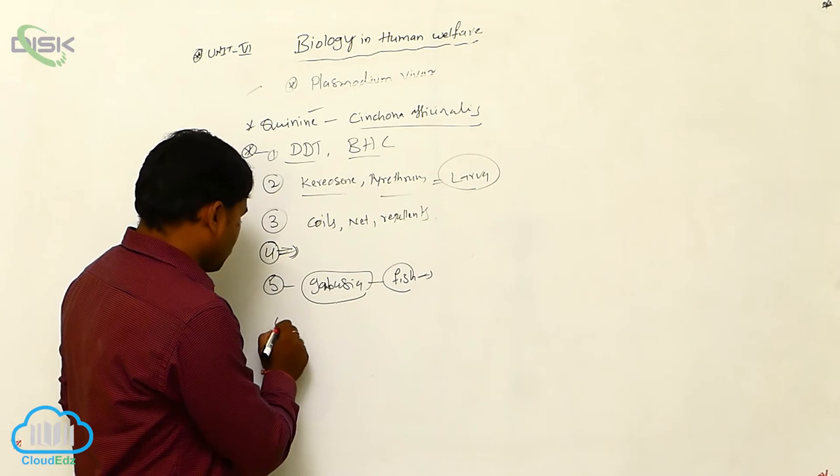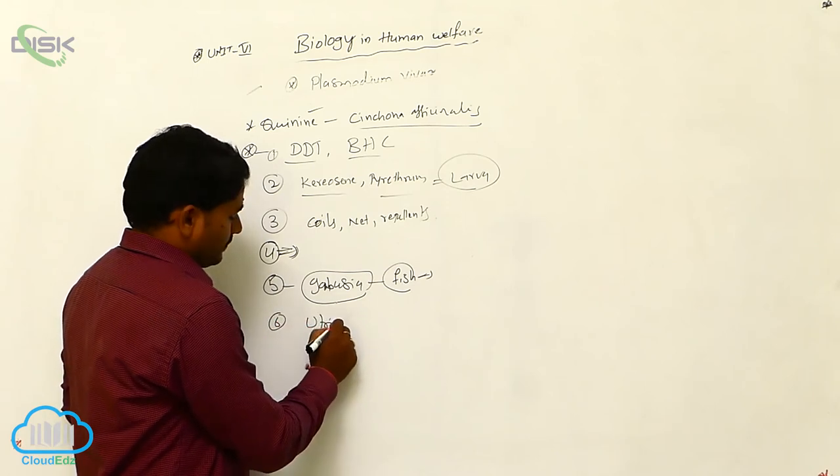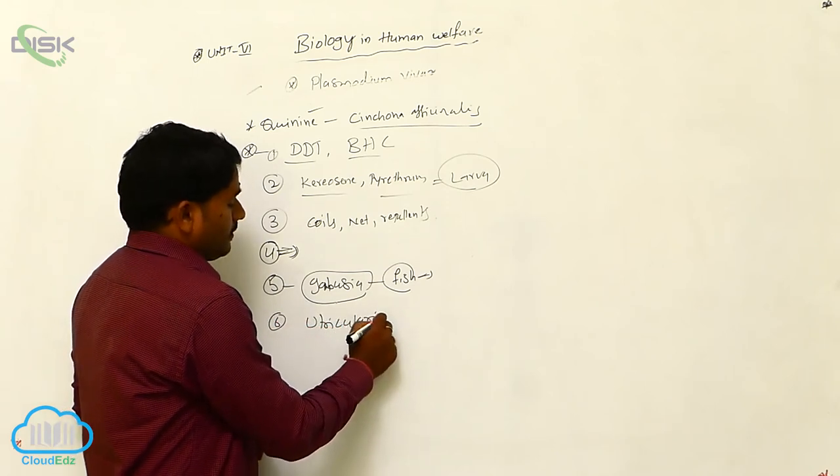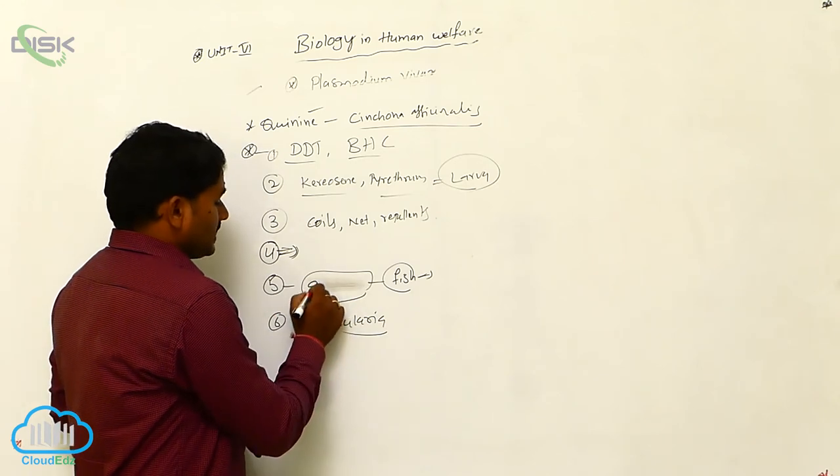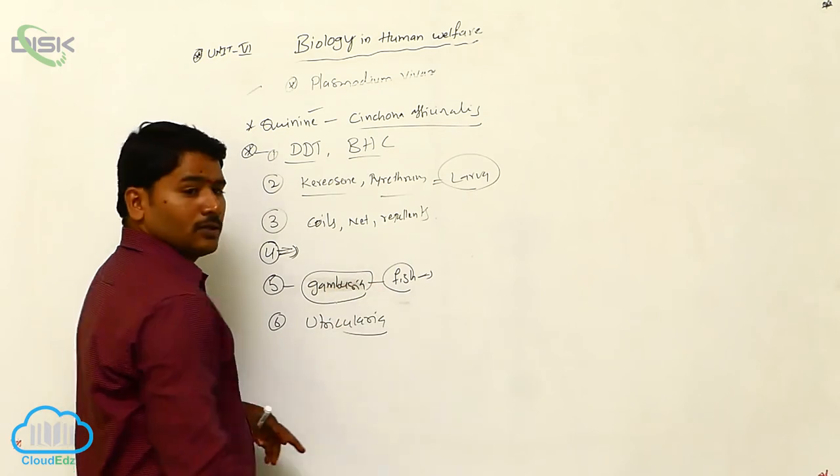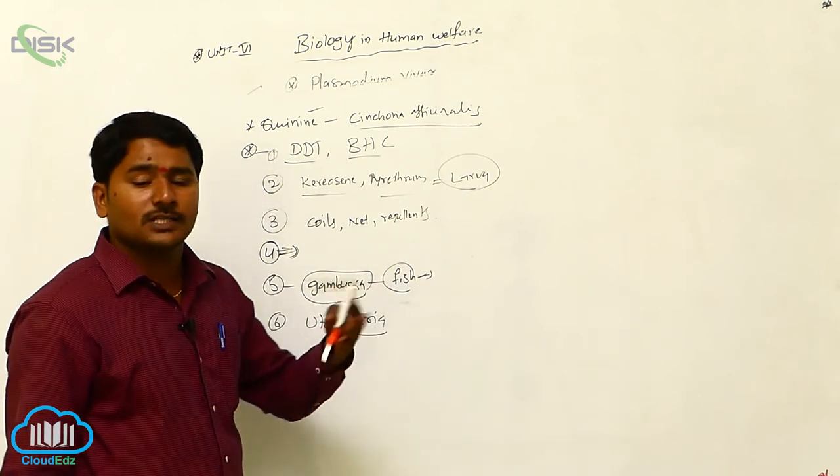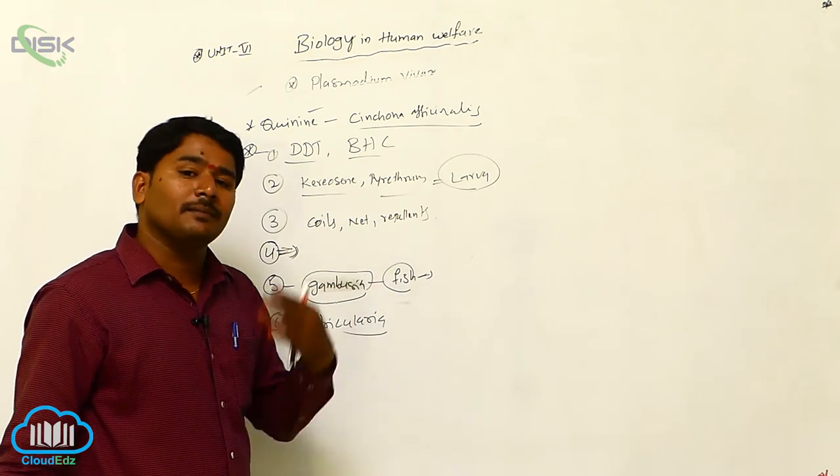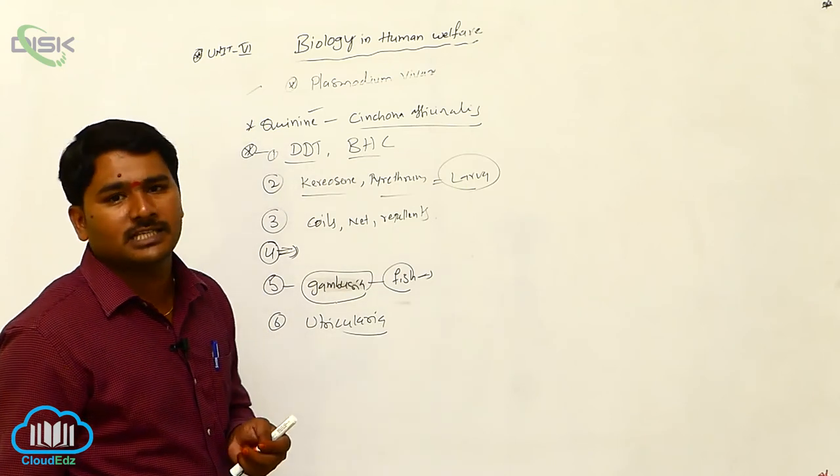Insectivorous plant is also there. Utricularia, the insectivorous plant Utricularia also can eat, can kill the mosquitoes, adult mosquitoes. By that we can escape from the mosquito bite.